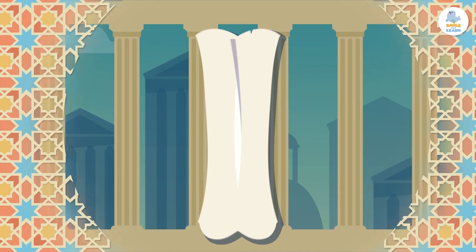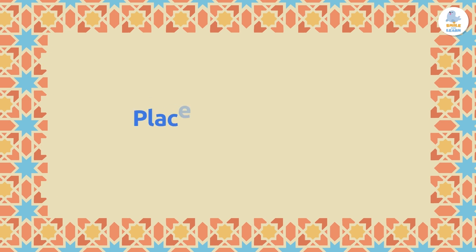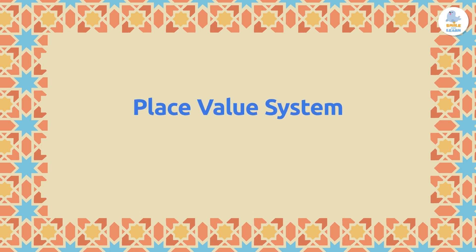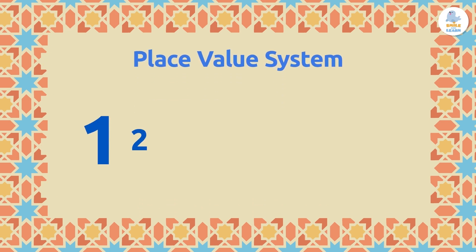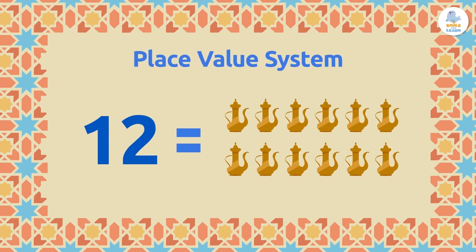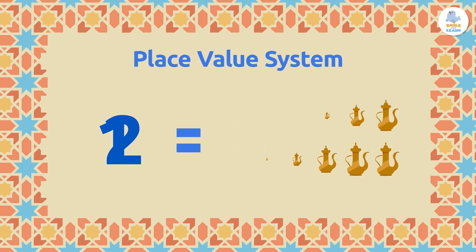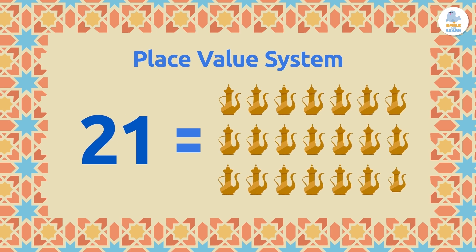Today the numbering system we use is of Arabic origin. This is a place value system, which means that the value of each digit depends on the place it has in the number.